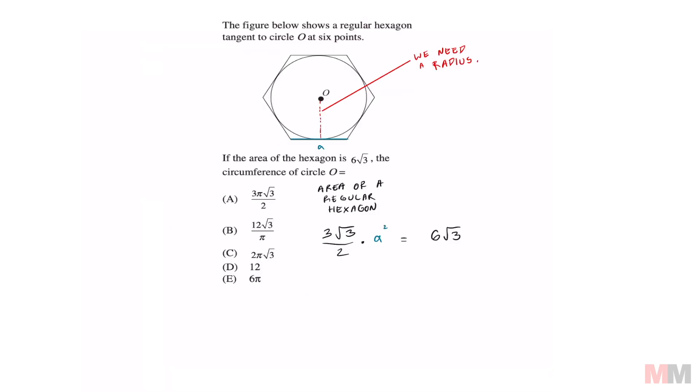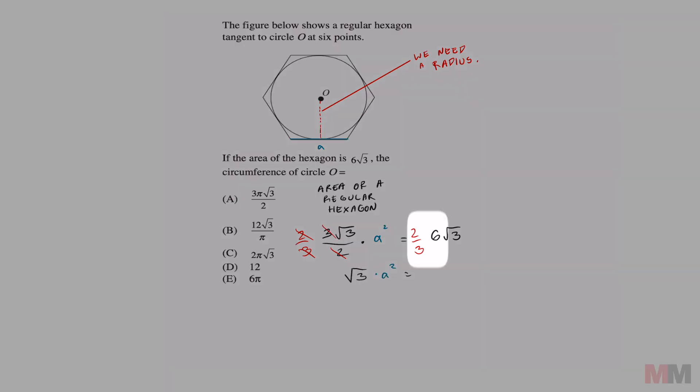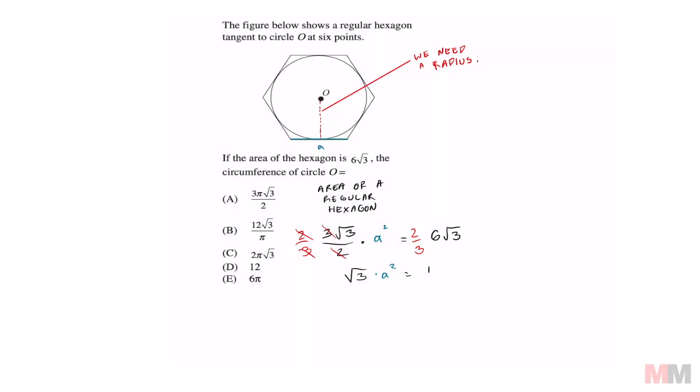From here, we just have to solve for a. The first thing I would do is multiply both sides by 2/3, and that's going to cancel these off. Now I'm left with √3 times a² equals 2/3 times 6, which gives me 4√3. Divide both sides by √3, and I'm left with a² equals 4. We need the positive answer for this because we're dealing with length, so the side length of that regular hexagon equals 2.